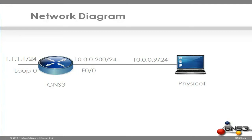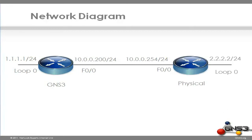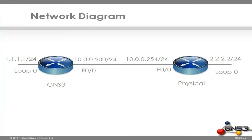We will give the PC an IP address of 10.0.0.9. Once we have completed that configuration, we will set up the GNS3 router to communicate with a physical Cisco router. I will configure the physical Cisco router with an IP address of 2.2.2.2. Then we will run a routing protocol between the GNS3 virtual router and the physical router — RIP in this example — and exchange routes.